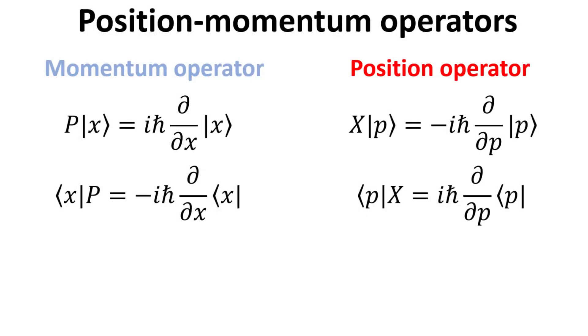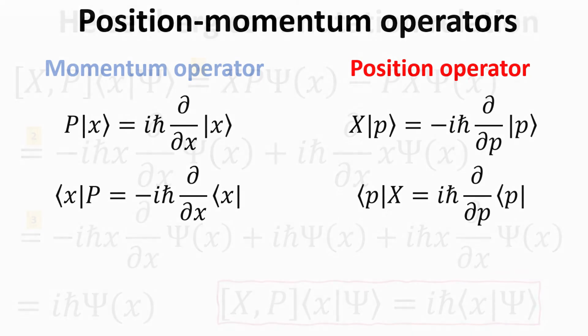We begin by recalling the fundamental relations for momentum and position operators we derived in previous video. Here, the momentum operator in the position representation becomes a differential operator in position, and vice versa. We shall use these relations in our derivation of the Heisenberg commutation relation.